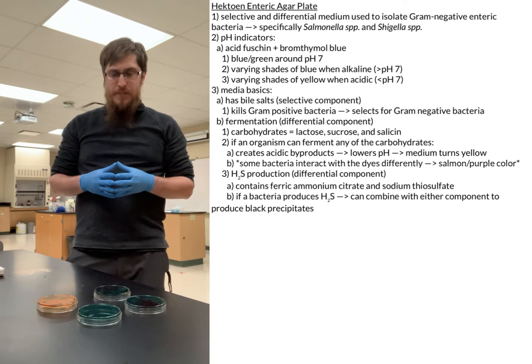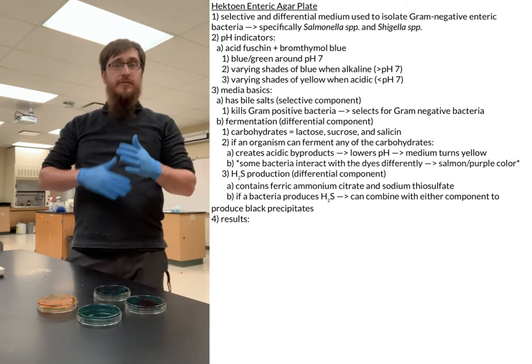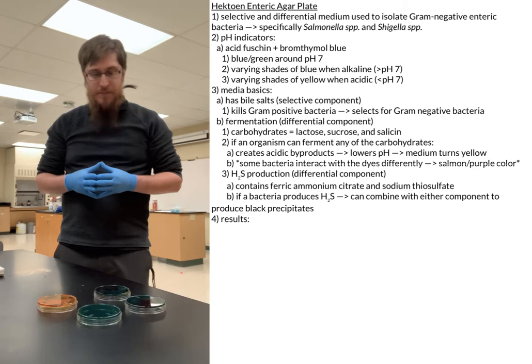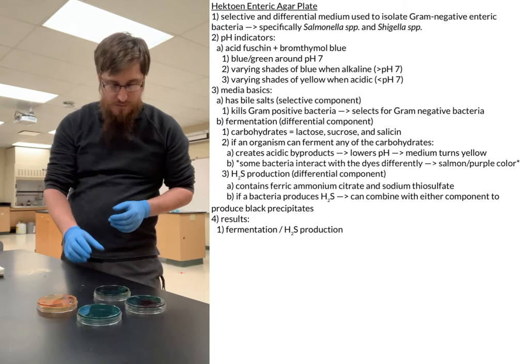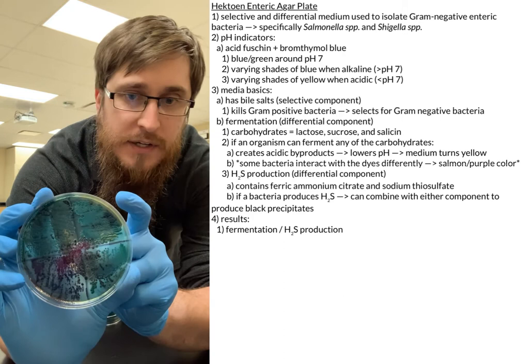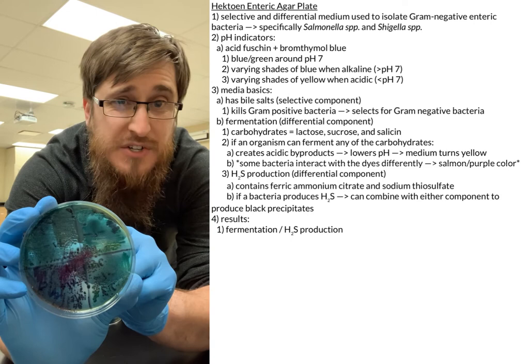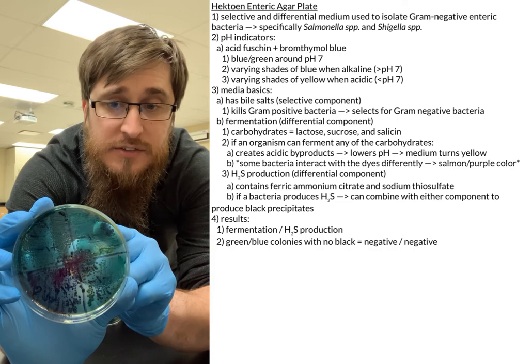With our media basics covered, let's talk about our results — what we can see after we've inoculated and incubated the plates and are ready to score them. Since we have both fermentation and hydrogen sulfide production results, we can get varying combinations of colors. If you see only greenish-blue colonies with no black dots, that would be a negative result for fermentation and negative for hydrogen sulfide production.